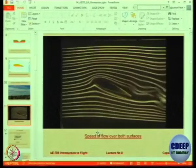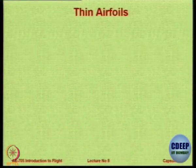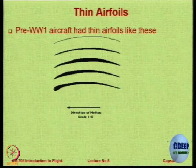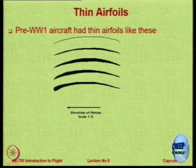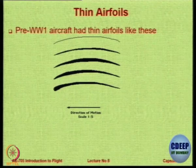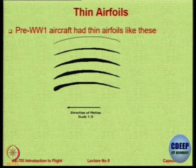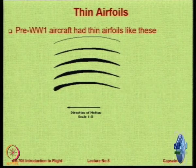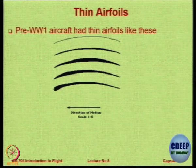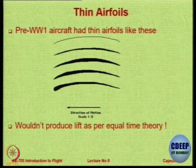This is proof that the flow on the upper surface definitely moves faster than the bottom — on that there is no argument — but the justification for the equal transit theory is wrong. Another example that completely debunks it: thin airfoils, like those used by the Wright Brothers, have the same curvature on top and bottom, yet they do produce lift. If the equal time theory were correct, such airfoils could never produce lift. But they did — so the theory is not correct.